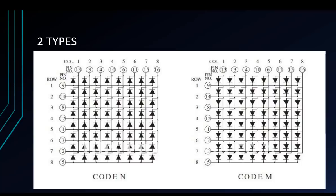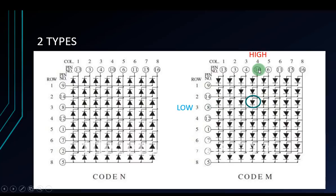I will give you an example to turn on one LED. If I want to turn on a specific LED, I will set the column 4 high and set row 3 low, and this LED will be turned on. On the left type it is reversed — to turn on that LED, you set column 4 low and row 3 high. They are the reverse of each other.